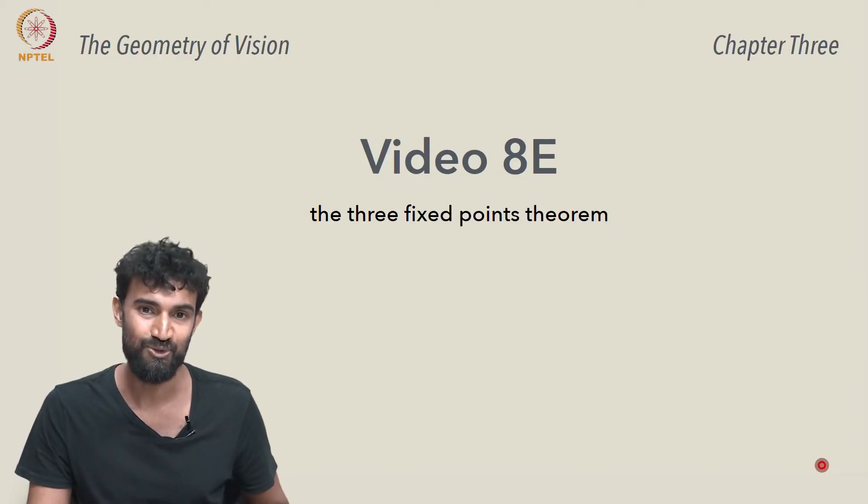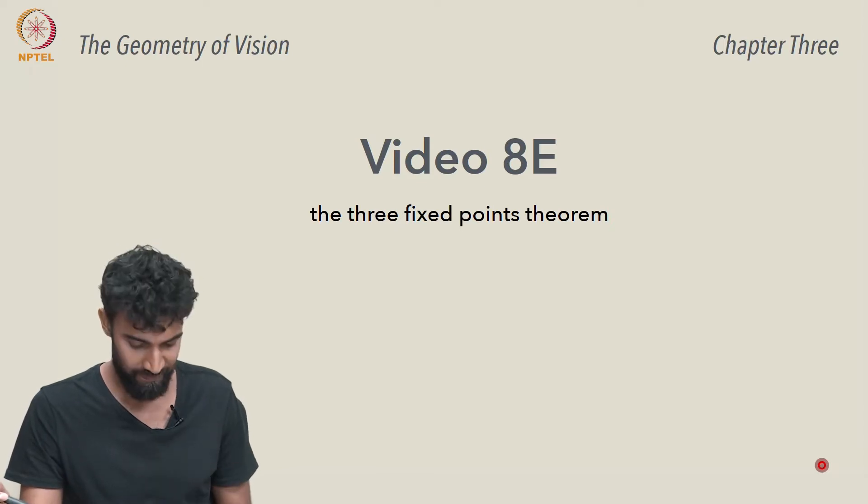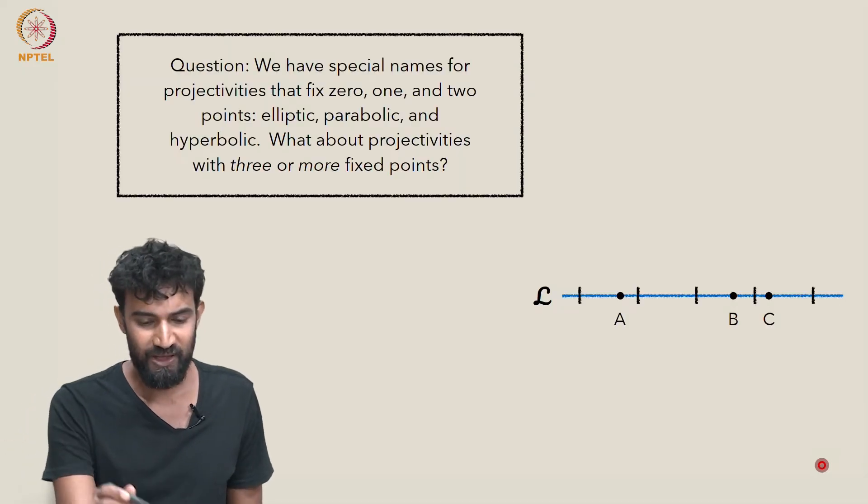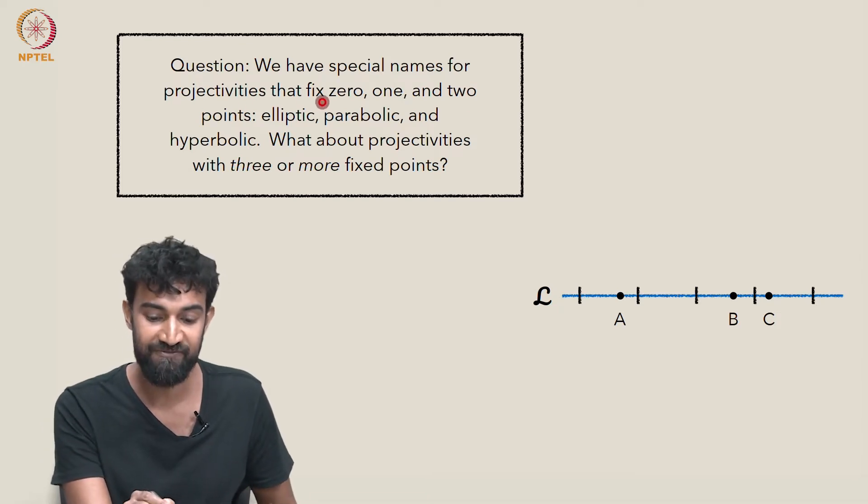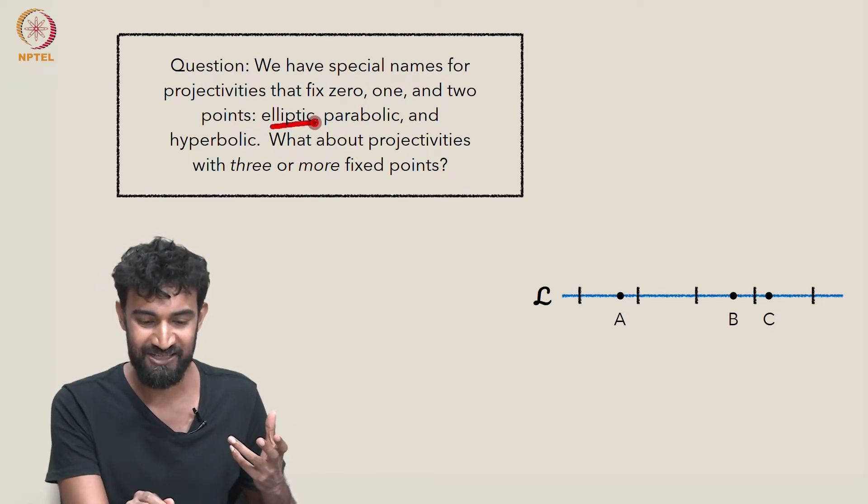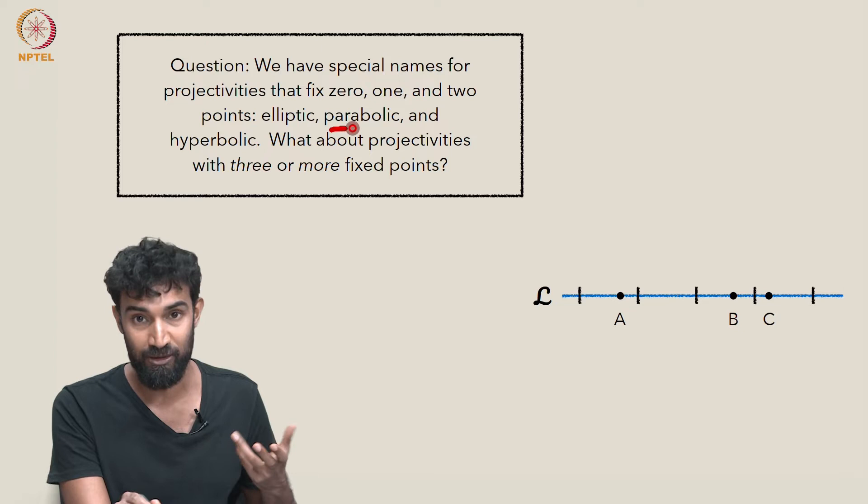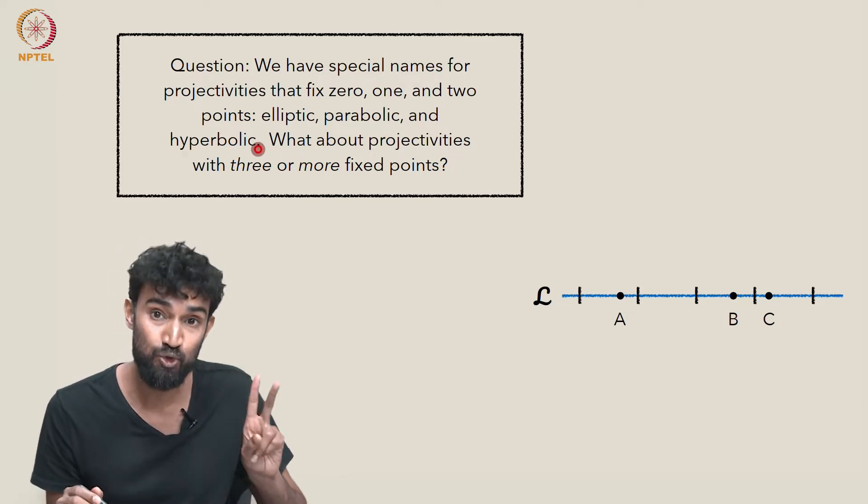Okay, so the last thing that I want to do is take a closer look at fixed points of projectivities. We gave special names for projectivities that fix zero, one, or two points: elliptic means it fixes zero points, parabolic means it has a single fixed point, and hyperbolic means it has two fixed points.